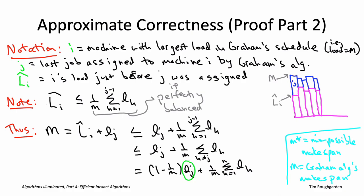Specifically, by our first lower bound, every job has to go somewhere, so the minimum makespan can't be less than the length of any job — we can upper bound the length of job J by M star. Our second lower bound says the best case is perfectly balanced loads, so 1-over-m times the sum of all job lengths is also at most M star. Bounding the first term by (1 minus 1-over-m) times M star and the second by M star, and adding them together, we get the quantity 2 minus 1-over-little-m times the optimal makespan M star.